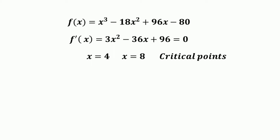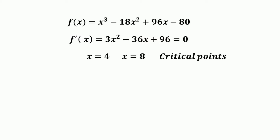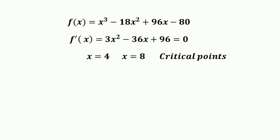Now we have a function and we want to find the critical values, the relative maximum or minimum values, and the inflection point. The function is f(x) = x³ - 18x² + 96x - 80. For the first order condition, we find the first derivative: f'(x) = 3x² - 36x + 96 = 0. Solving this by the quadratic formula or factoring gives x = 4 and x = 8. So x = 4 and x = 8 are the critical points.